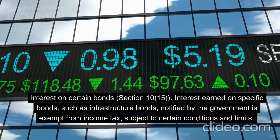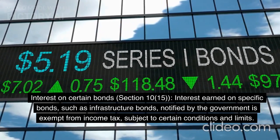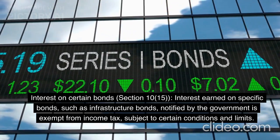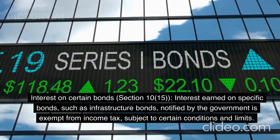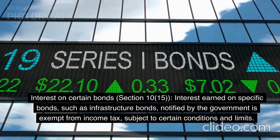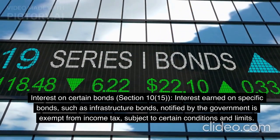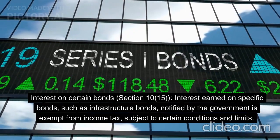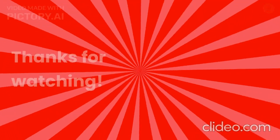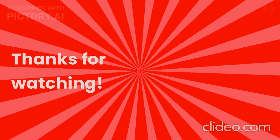Interest on certain bonds — Section 10(15). Interest earned on specific bonds, such as infrastructure bonds, notified by the government is exempt from income tax, subject to certain conditions and limits.